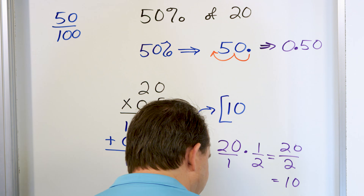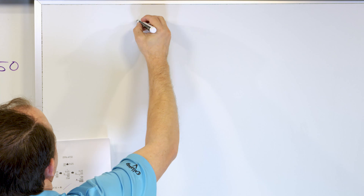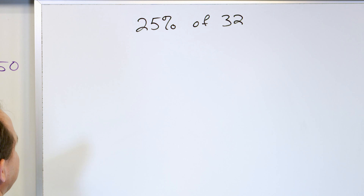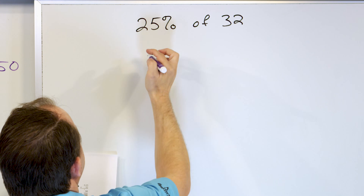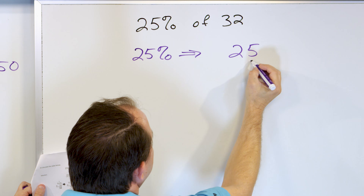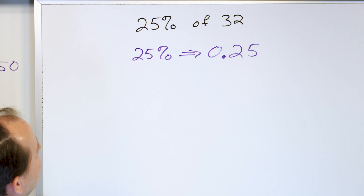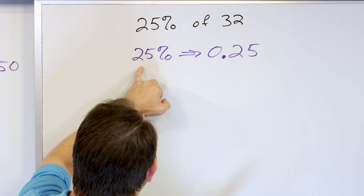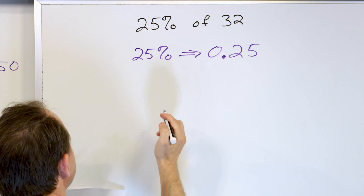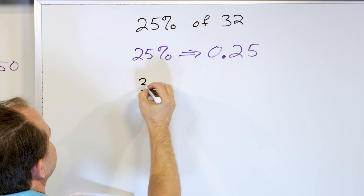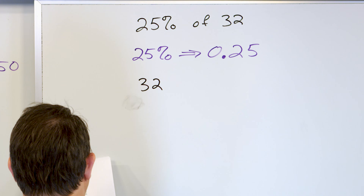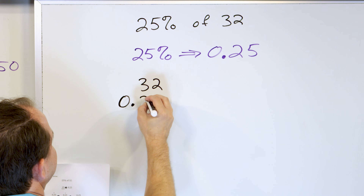As always, the first problem takes the longest. Let's crank through the rest of these. Let's calculate what is 25% of 32. Let's say I have 32 chickens and I'm going to give 25% of them away. First of all, 25% — write the number 25 down, the decimal is here, move it two spots to the left. So it's going to be 0.25. That's what 25% is. Move the decimal two spots to the left because it's 25 divided by 100.